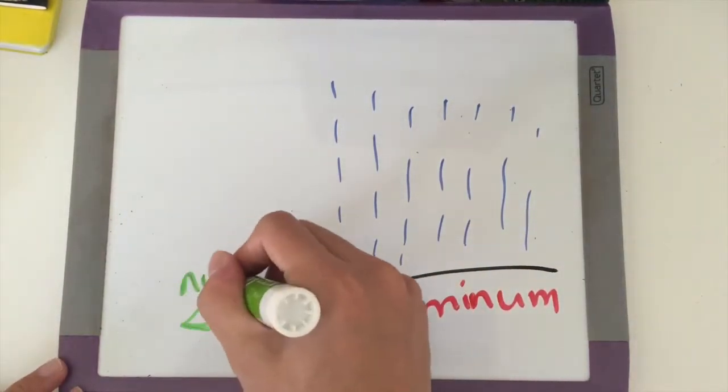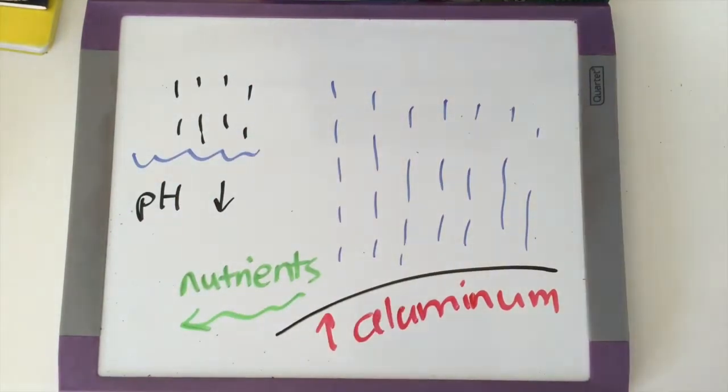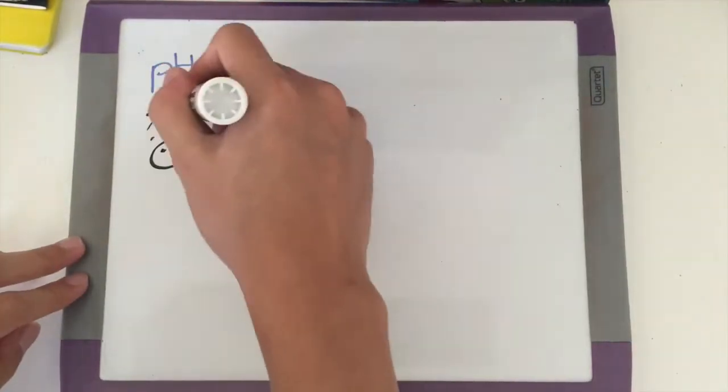Acidic rain changes the pH of bodies of water, which affects organisms throughout it. For example, at pH 5, most fish cannot hatch eggs, nor can they tolerate acidic water.